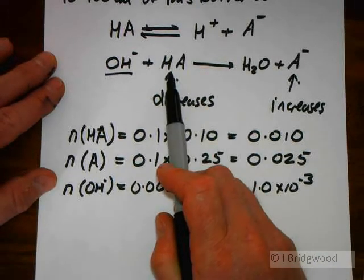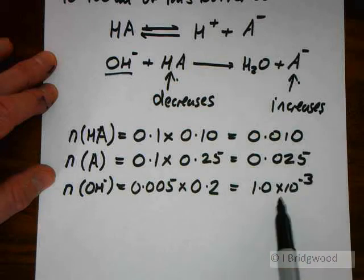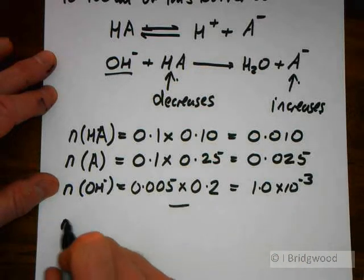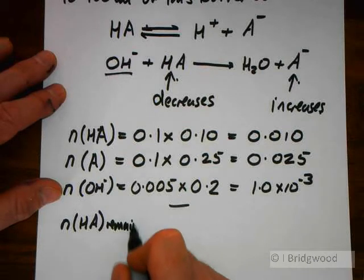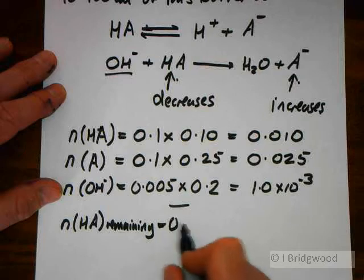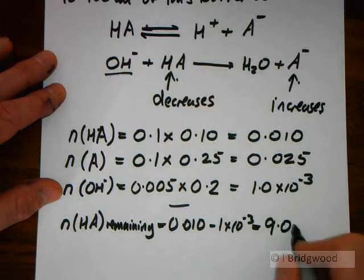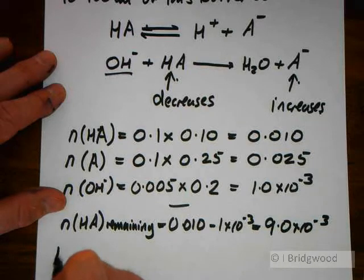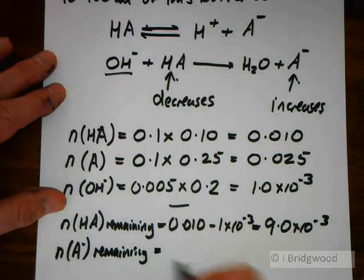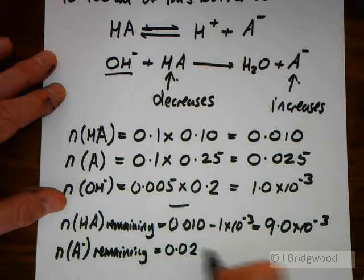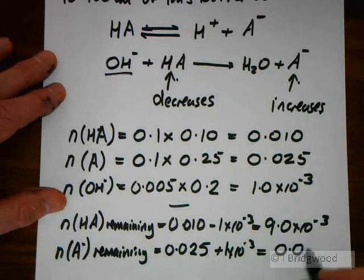So therefore, HA is going to decrease by 1 times 10 to the minus 3, and A⁻ is going to increase by 1 times 10 to the minus 3. So therefore, we can say that the number of moles of HA remaining is going to be 0.010 minus 1 times 10 to the minus 3, which is 9.0 times 10 to the minus 3. And the number of moles of A⁻ remaining is 0.025 plus 1 times 10 to the minus 3, which is 0.026.